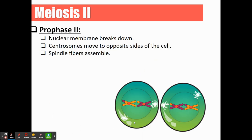Now we're going to push through to meiosis two. Notice we're jumping straight into another round of PMAT — we are not going to go through interphase again. Interphase happens at the beginning of meiosis; it will not happen in the middle of meiosis. In prophase two, just like in prophase one, the nuclear membrane is going to break down, the centrioles are going to move to opposite sides of the cell, and then those spindle fibers are going to assemble.